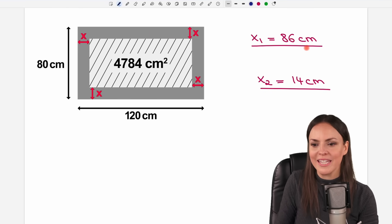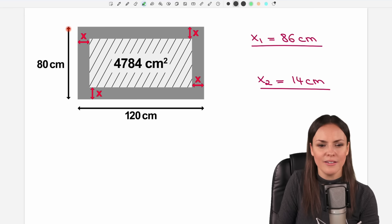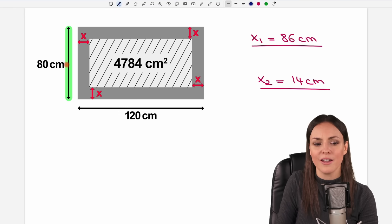So what about the 86 centimeters? Is that possible for this problem here? Let's take a look at this part. This has a length of 80. So our x can't be 86 if the entire side is only 80 centimeters. So this is not possible for our problem.